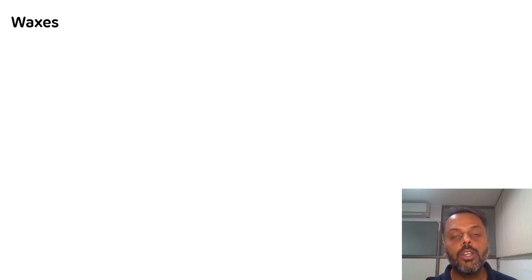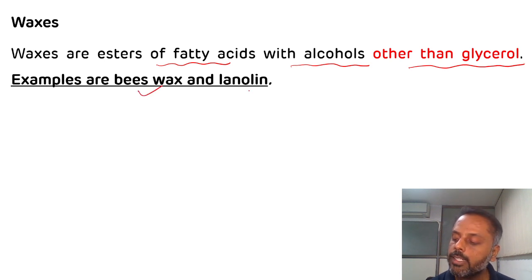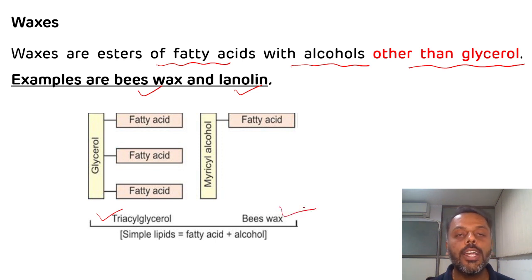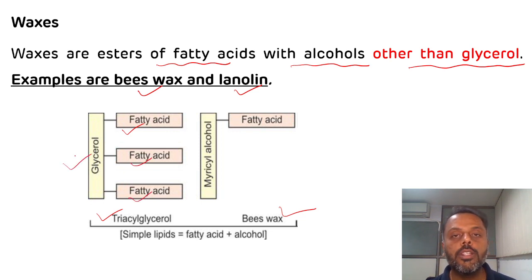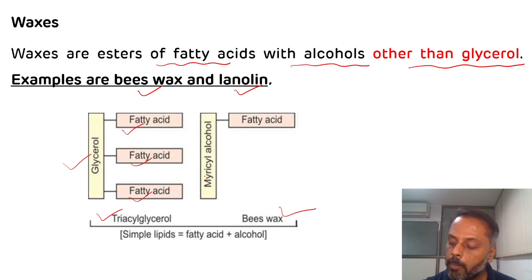Waxes are esters of fatty acid with alcohol other than glycerol. Examples are beeswax and lanolin. Triacylglycerol contains glycerol as alcohol, while in waxes there is a presence of other alcohols — for example, myricyl alcohol is present in beeswax.